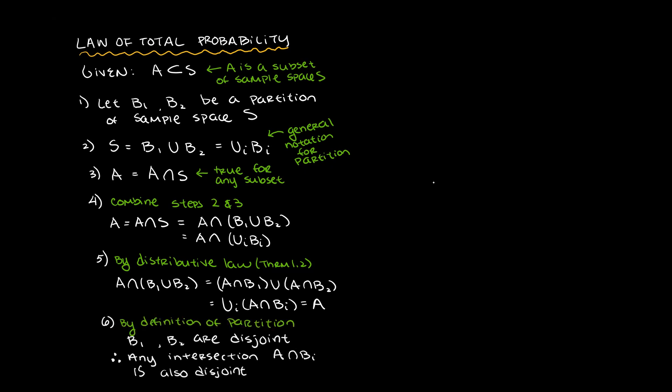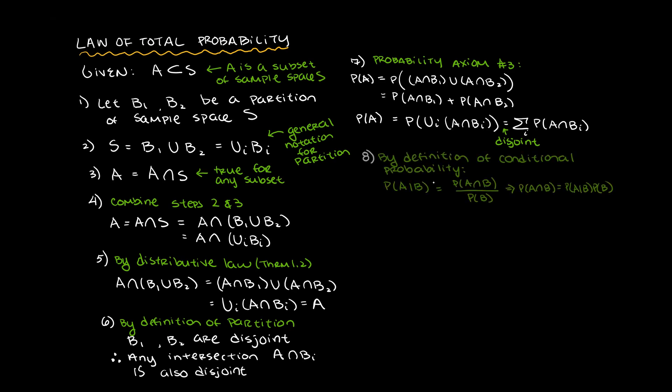By definition of partition, B1 and B2 are disjoint, so any intersection of A and B sub I will also be disjoint. Using probability axiom number 3, the unions of those intersections are the summation of the probabilities of those intersections, since those intersections are disjoint. Recall the definition of conditional probability for this last step.